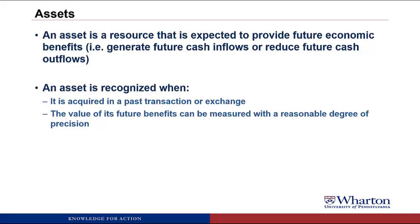For example, if we buy a truck, the truck would be considered an asset. We acquired ownership of the truck in an exchange, and the value of the benefits of the truck are equal to the price that we paid to buy the truck, so both criteria are satisfied, and it would be an asset.